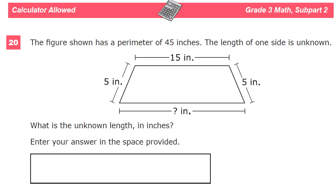This is the grade three math practice test for TN Ready. On this version of the test, this is question number 20. The figure shown has a perimeter of 45 inches. The length of one side is unknown, and they did give us an image. What is the unknown length, which is down here, this question mark, in inches? Enter your answer in the space provided.